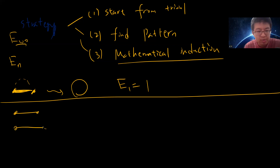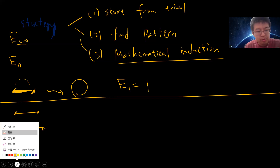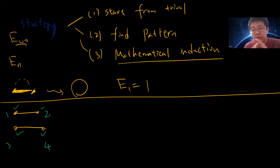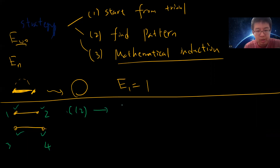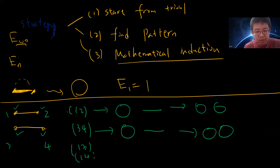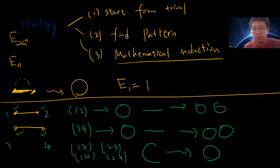Now suppose I have two noodles. Something interesting happens. I randomly choose two ends. If I choose ends from the same noodle, it becomes a circle. Label the ends one, two, three, four. If I choose one-two, that makes one circle, then three-four makes another, giving two circles. If I choose one-two or three-four at the start, I always end up with two circles. If I choose one-three, one-four, two-three, or two-four, I connect the two noodles, and they eventually form one big circle.